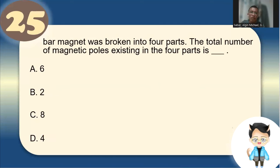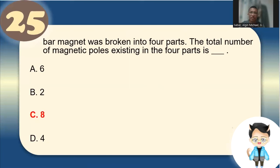Number 25: A bar magnet is broken into four parts. The total number of magnetic poles in the four parts is 8 — each piece has 2 poles (north and south), so 4 × 2 = 8. The answer is letter C.